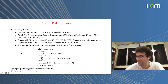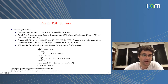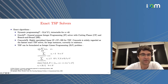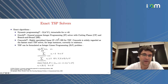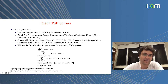We have dynamic programming, then Gurobi, which is an integer programming solver using cutting planes and branch-and-bound, and Concord, which is a specialized version of integer programming with cutting planes and branch-and-bound. Concord today is seen as the fastest exact TSP solver.